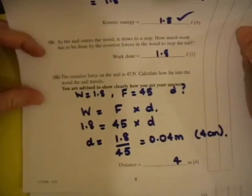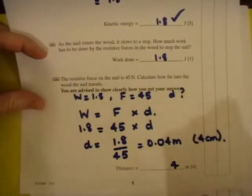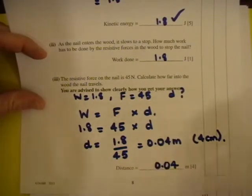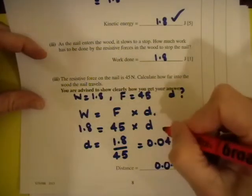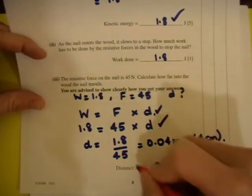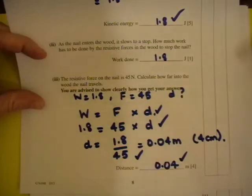OK, so the answer there is 0.04 metres, or 4 centimetres. And so we get one tick for your answer, you get a tick for that, and a tick for that, and then a tick for dividing those two.